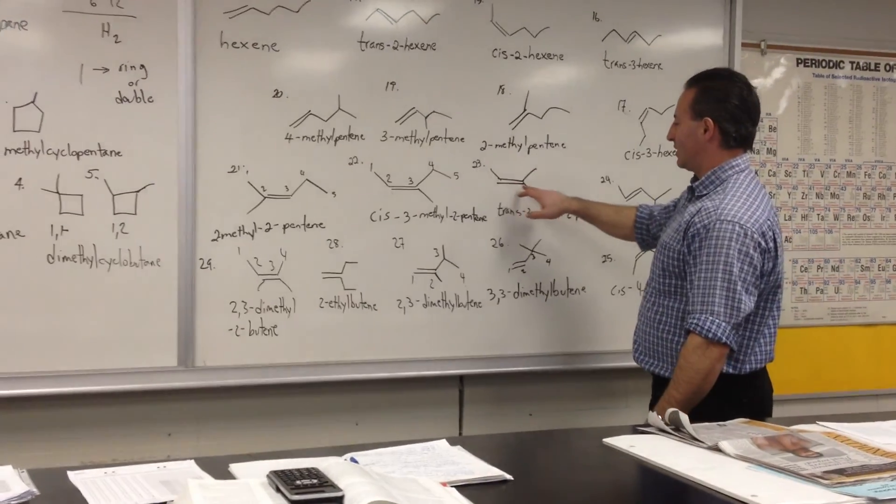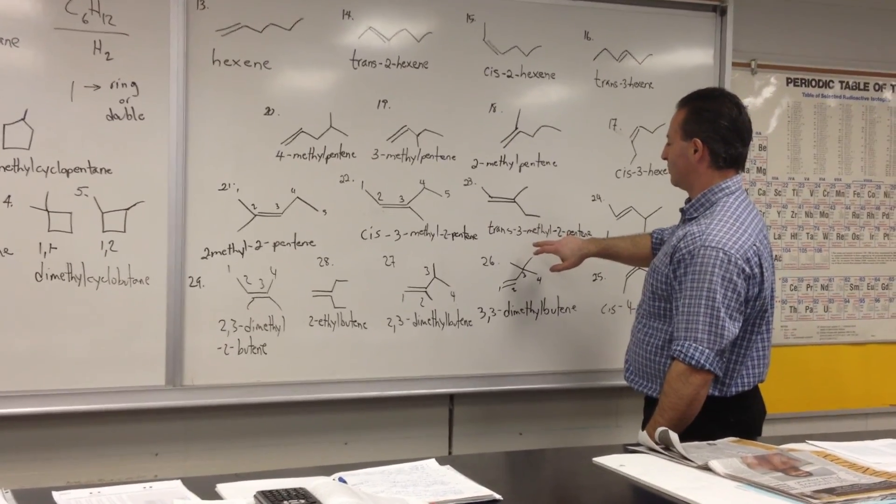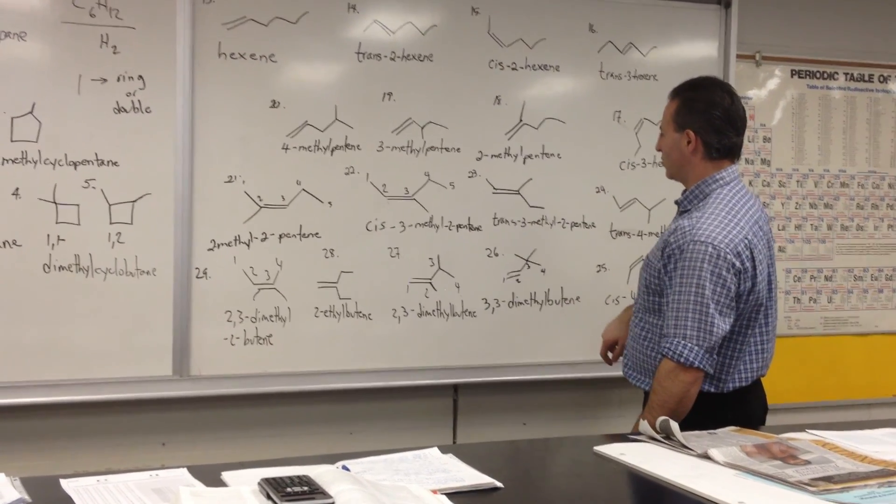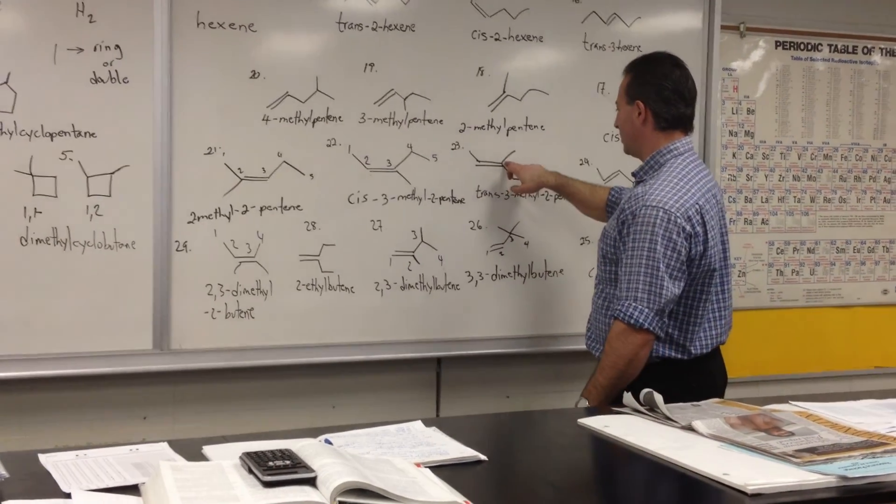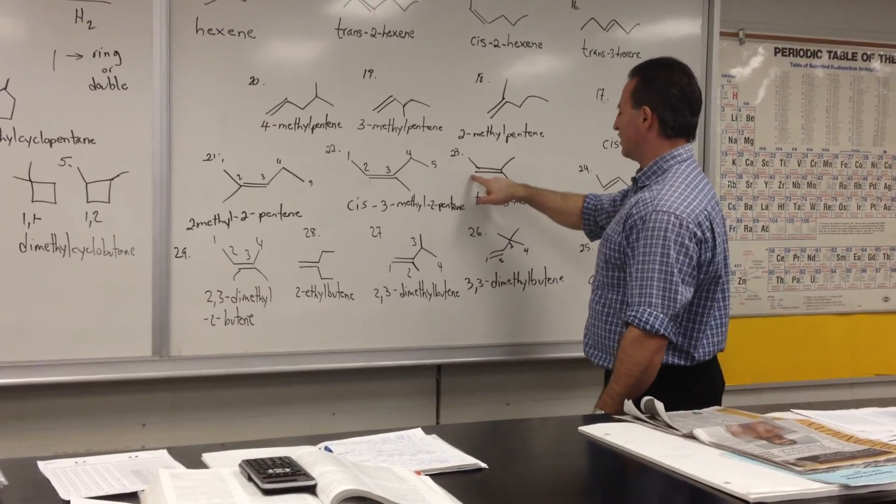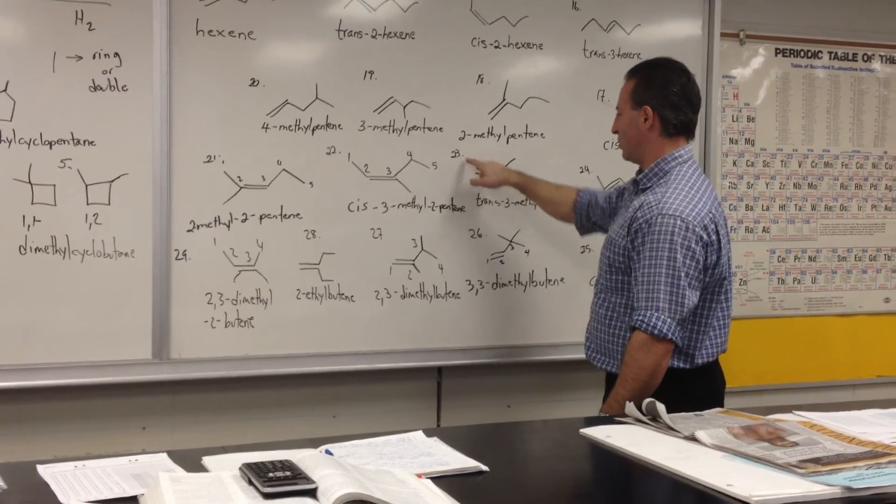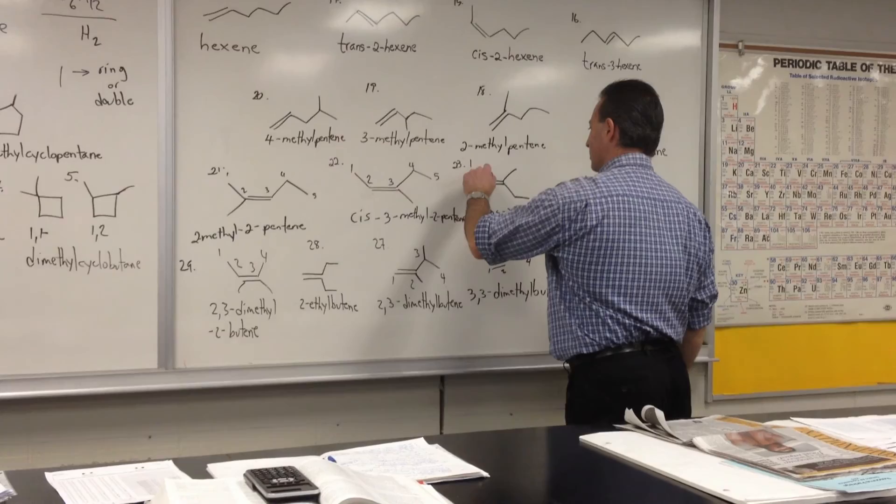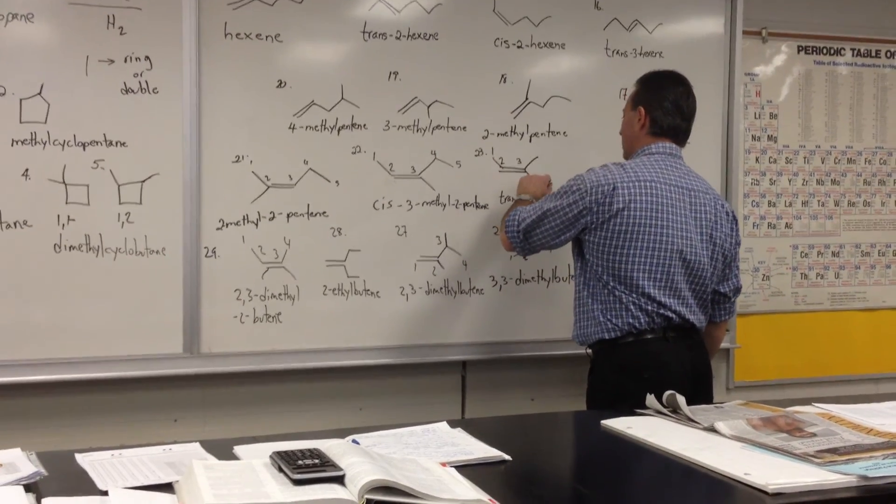So they're both 3-methyl-2-pentene. The methyl group is at the third position, 1-2-3. Here's that methyl group. And the double bond is at the second position, 1-2. You always count it from the side that's going to get the lowest number to the double bond.